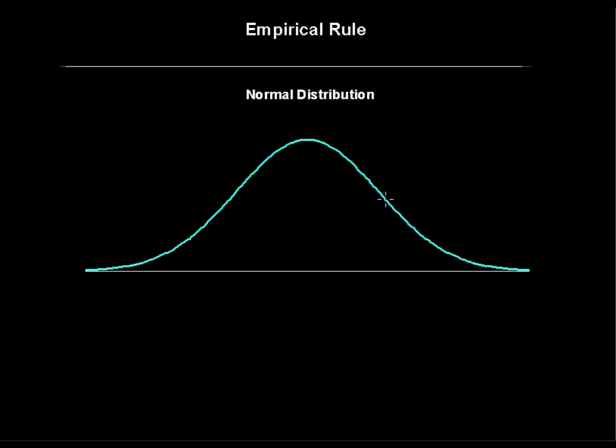Here we have a general normal distribution graph, or the bell curve, sometimes it's called. Let's say it's a distribution of heights. Heights is a classic example of data that are normally distributed.